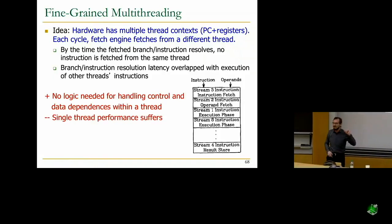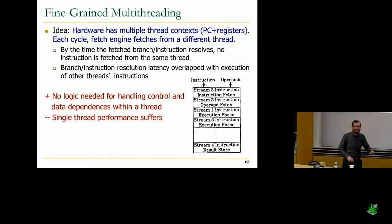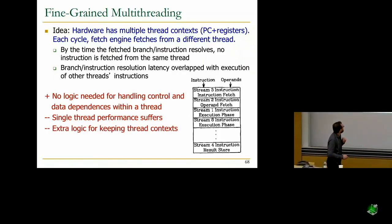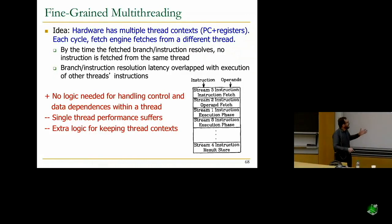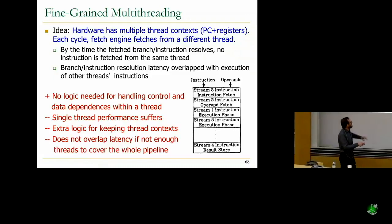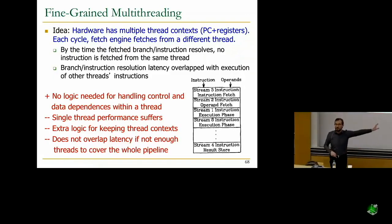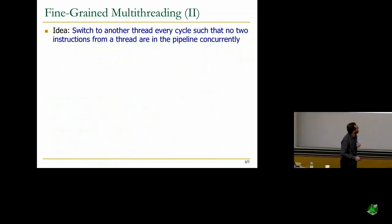The downside, of course, is that single-thread performance suffers, because you're fetching one instruction into the pipeline every N cycles, where N is the depth of your pipeline. You also need extra logic for keeping thread context — you need program counters and registers. And you do not overlap latency if there are not enough threads to cover the whole pipeline. This model works really well if there are enough threads to cover the pipeline.